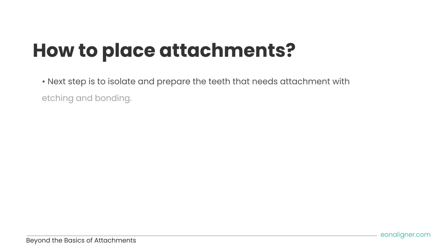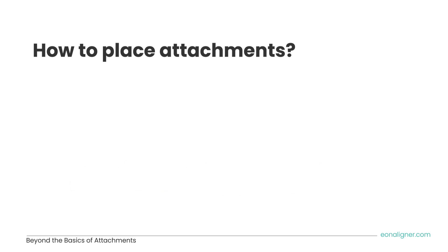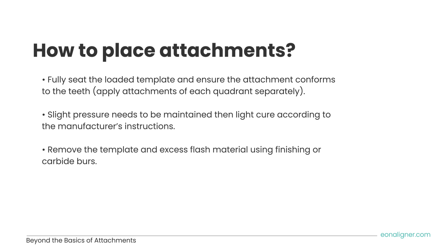Isolate and prepare the teeth that need attachments with etching and bonding. Apply a small amount of composite in the attachment pocket, slightly overfilling them. A useful tip is to apply a very light coat of petroleum jelly in the attachment pocket prior to placing composite — this assists in easier removal after curing. Fully seat the loaded template and ensure the attachment conforms to the teeth. Apply attachments per quadrant separately; no more than three attachments per quadrant simultaneously, as this affects template insertion and removal. Maintain slight pressure during light curing.